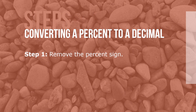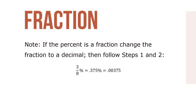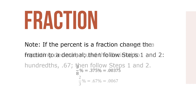Here are the steps to converting a percent to a decimal. Step 1: Remove the percent sign. Step 2: Divide by 100. Note: if a percent is a fraction, change the fraction to a decimal, then follow steps 1 and 2. If the percent is a fraction with a repeating decimal, round the decimal to hundredths, like 0.67, and then follow steps 1 and 2.